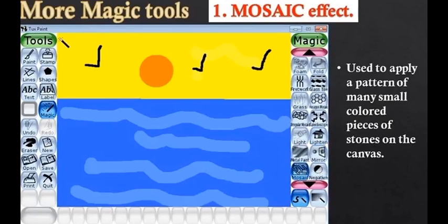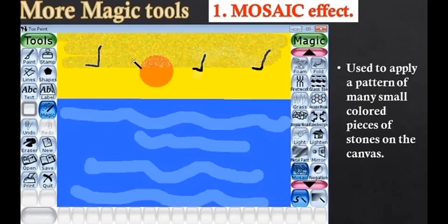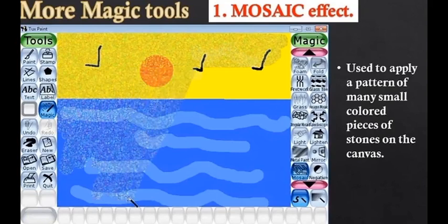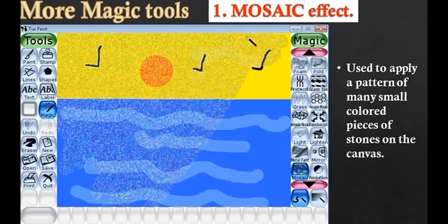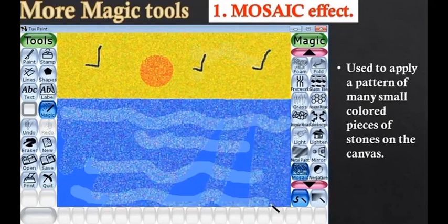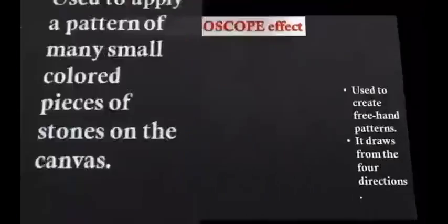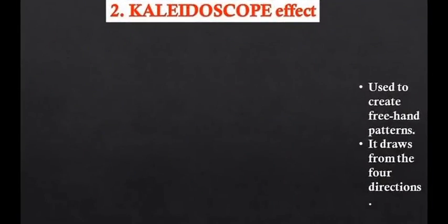After selecting this tool, just drag the wand on your drawing and you can see the canvas will be filled with mosaic effect. Clicking on it will change its color. If you click again, its color will change. This is how mosaic effect works.